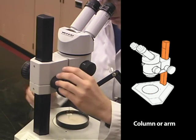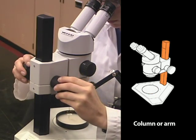In a stereo microscope, a column or arm connects the stage to the rest of the microscope.